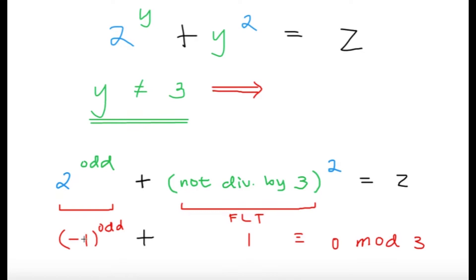Now, here is where modulo 3 will come in handy again. Because 2 raised to an odd number, that's the same as saying negative 1 raised to an odd number. Negative 1 raised to an odd number gives negative 1. Now, something not divisible by 3 raised to 2 by Fermat's Little Theorem, that's going to give you 1. So if you recall, Fermat's Little Theorem, a raised to p minus 1 is congruent to 1 modulo p, where a and p are relatively prime. Something not divisible by 3 squared, because 2 over here is 3 minus 1, that's going to give you 1 modulo 3.